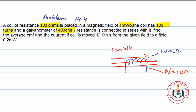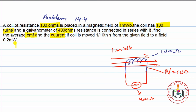ایک galvanometer اس coil کے ساتھ series میں connect کیا ہوا ہے اور اس galvanometer کی جو resistance ہے وہ 400 ohms ہے۔ Average EMF find کرنی ہے اور current find کرنا ہے، if coil is moved in 1/10 seconds from the given field to a field of 0.2 milliwebers۔